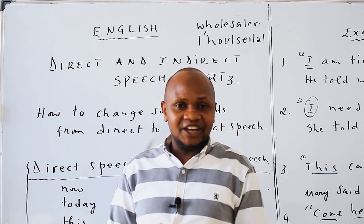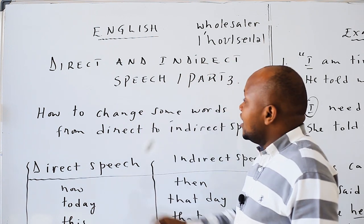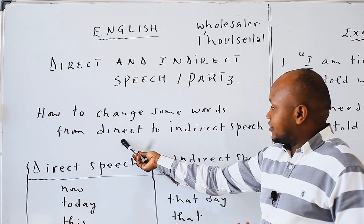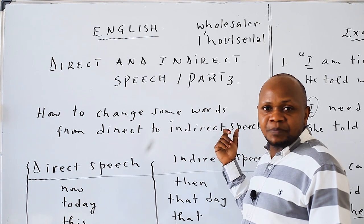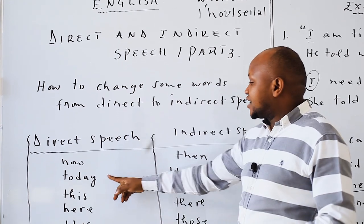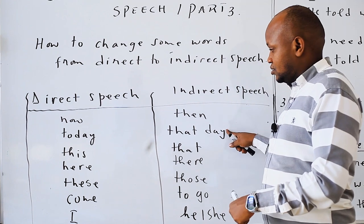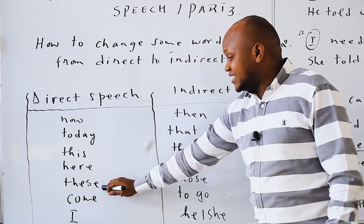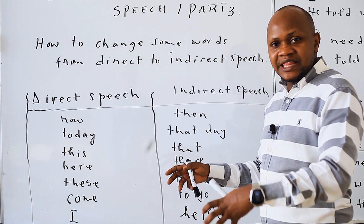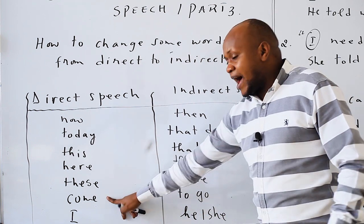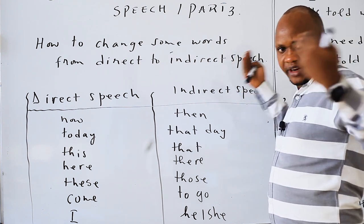Good. Then we are going to teach you direct and indirect speech, Part 3: how to change some words from direct to indirect speech. In indirect speech: 'now' changes to 'then'; 'today' changes to 'that day'; 'this' changes to 'that'; 'here' changes to 'there'; 'these' changes to 'those'; 'come' changes to 'go'; and 'I' changes to 'he' or 'she'.